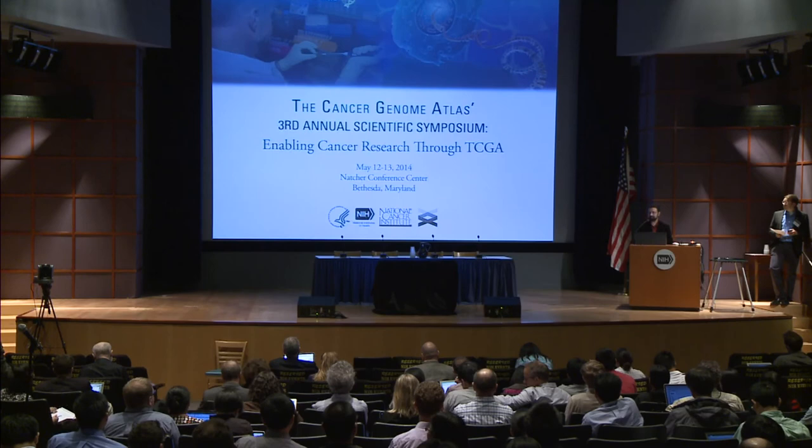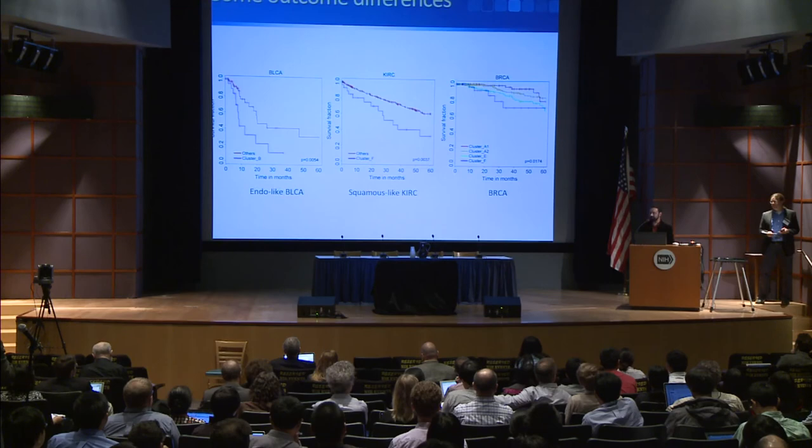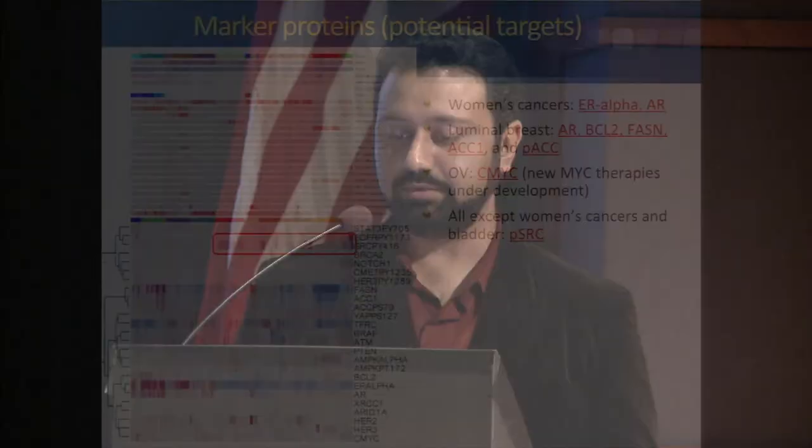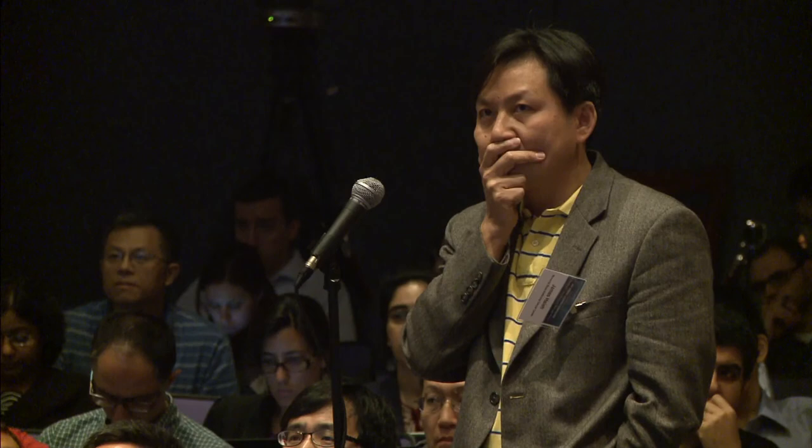In the squamous-like kidney cancer cluster, we can see some of the differentiating markers. Phospho-SRC is elevated in that cluster versus the others. FASN is also differentially expressed, as is AMPK-alpha. Those are some of the markers we see between the two clusters.